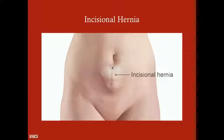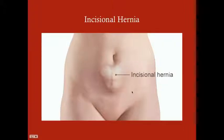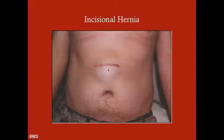Here's an incisional hernia — very obvious because you've got a scar here and a hernia here. It's very possible this could have been a traditional C-section incision. We now do Pfannenstiel C-sections going across, and the reason that's good is because you can have a vaginal birth after that C-section. With the traditional vertical incision, you can't. Here's another incision — this one is even larger. And here's another one.